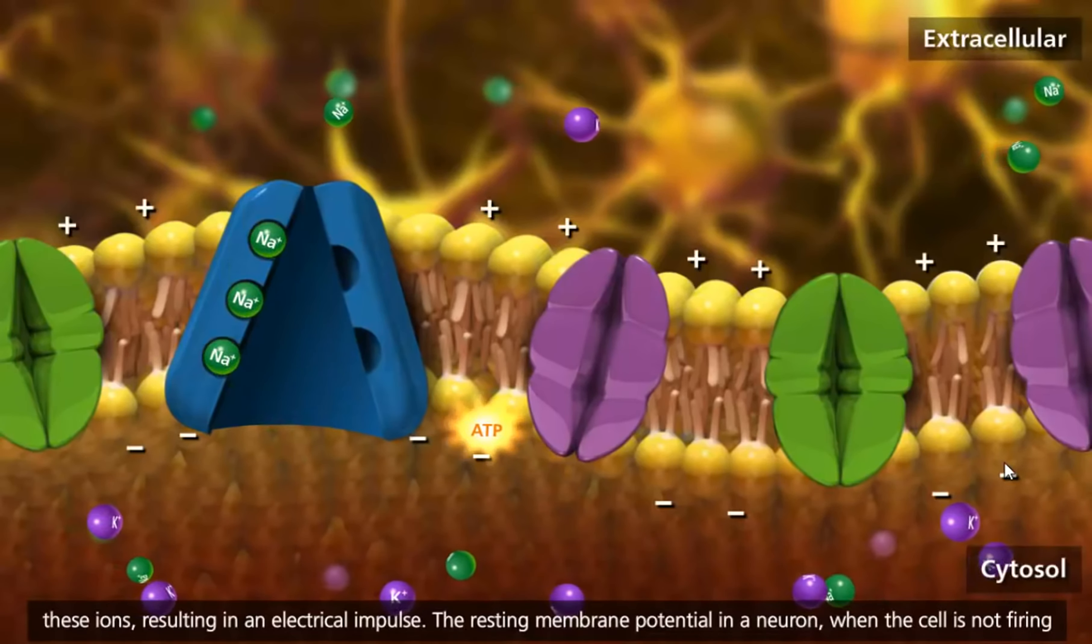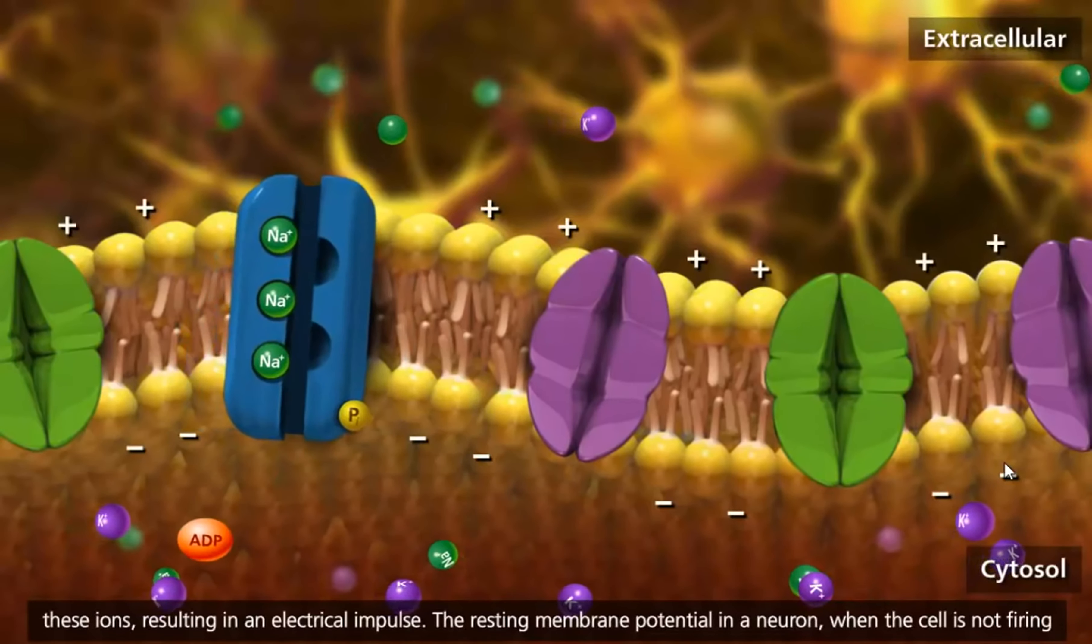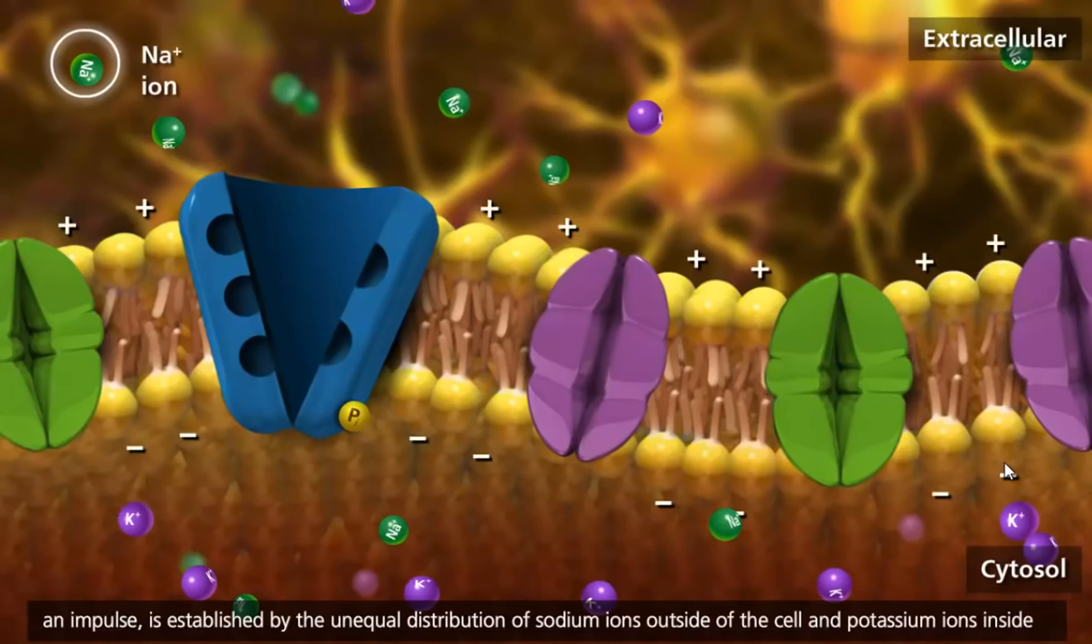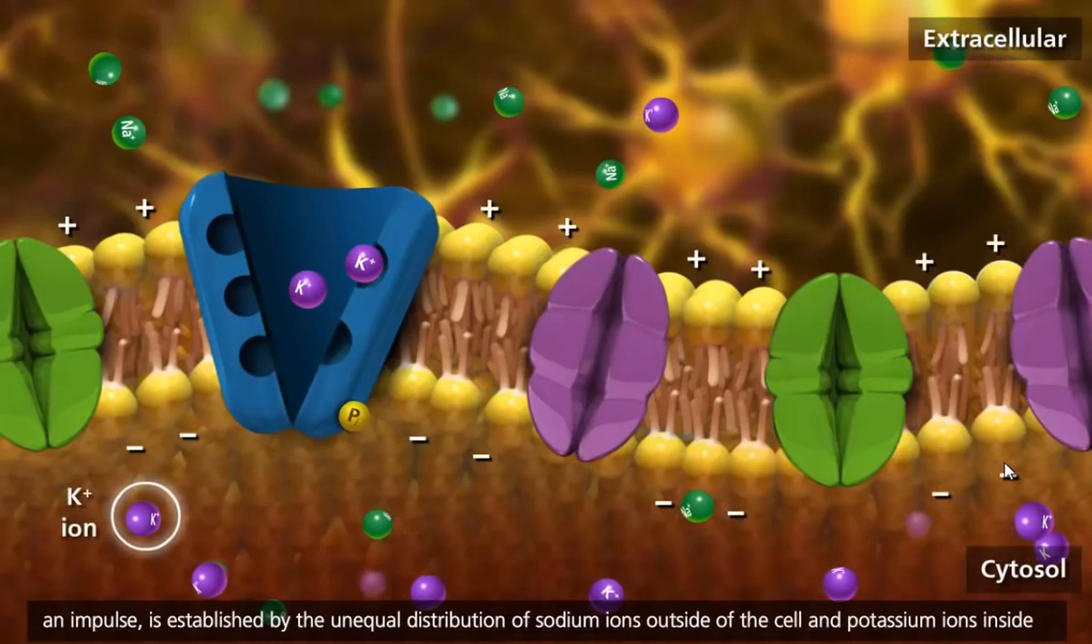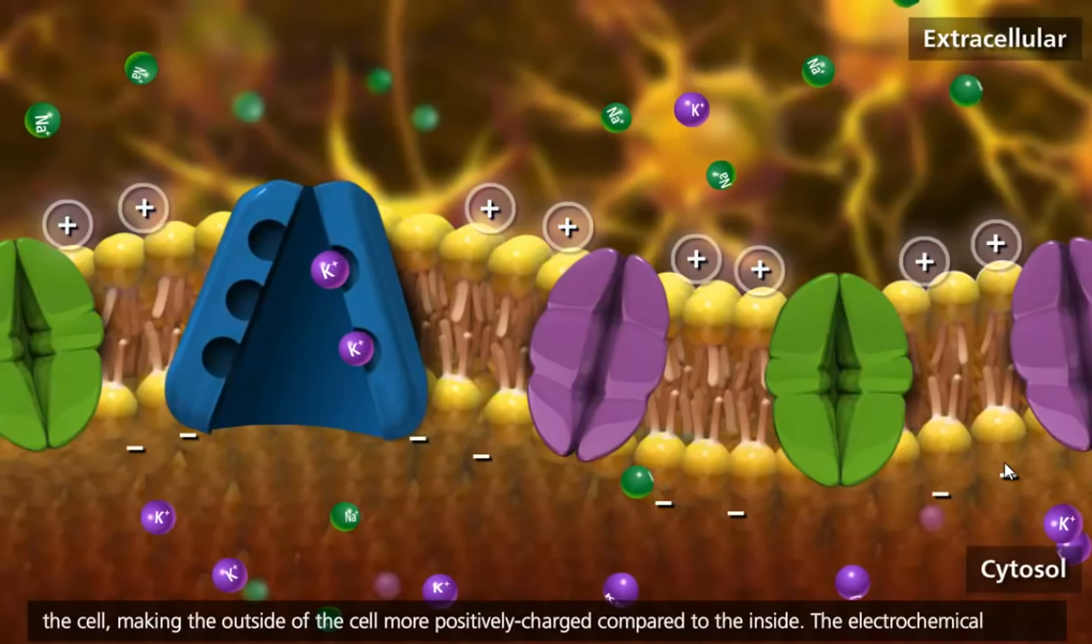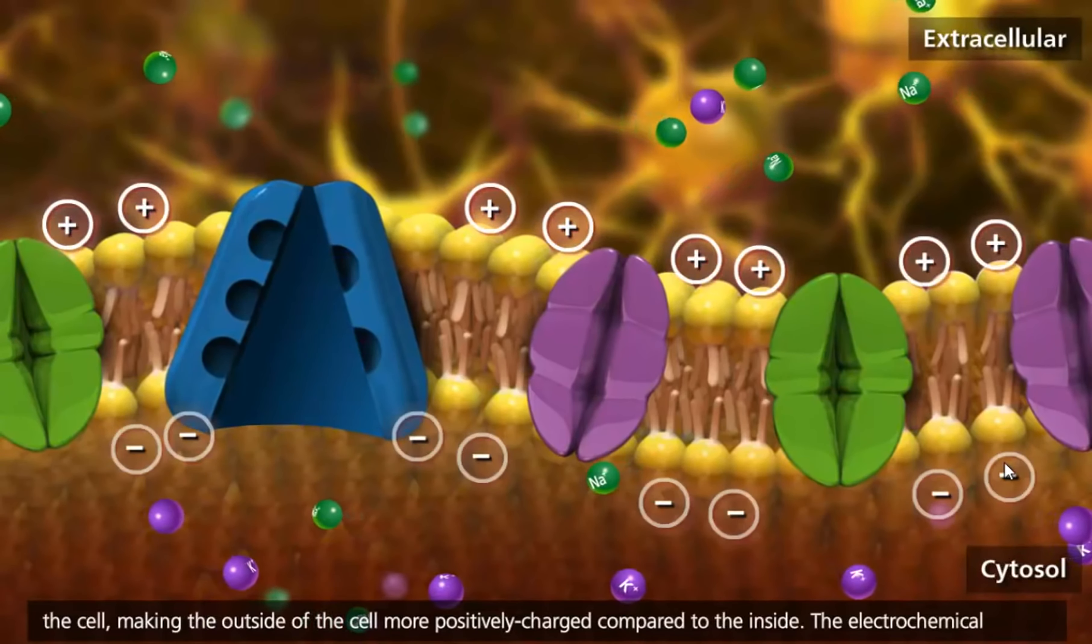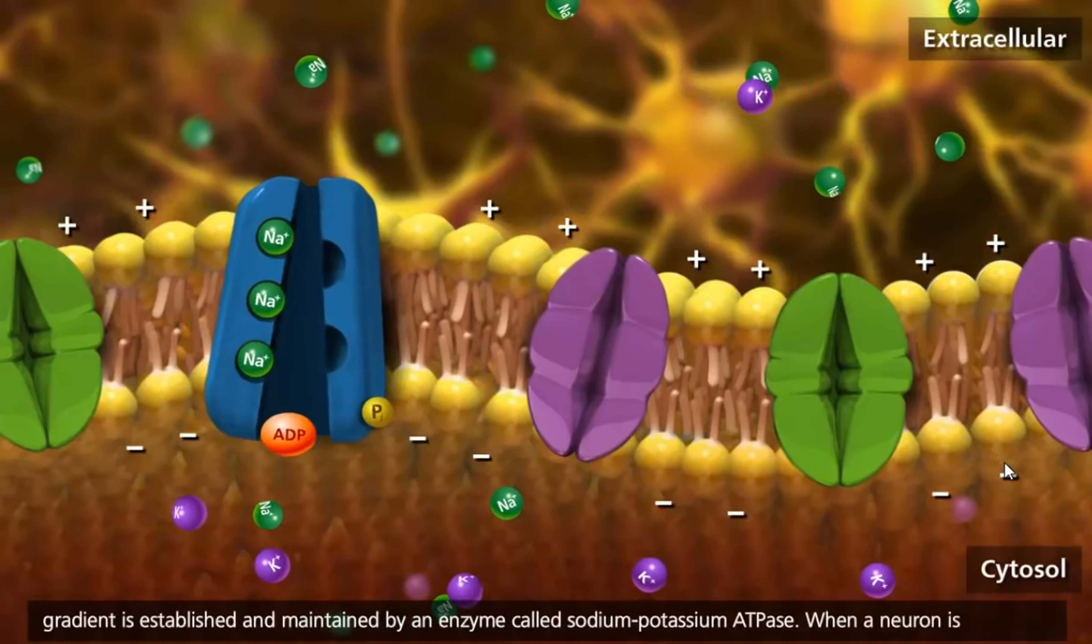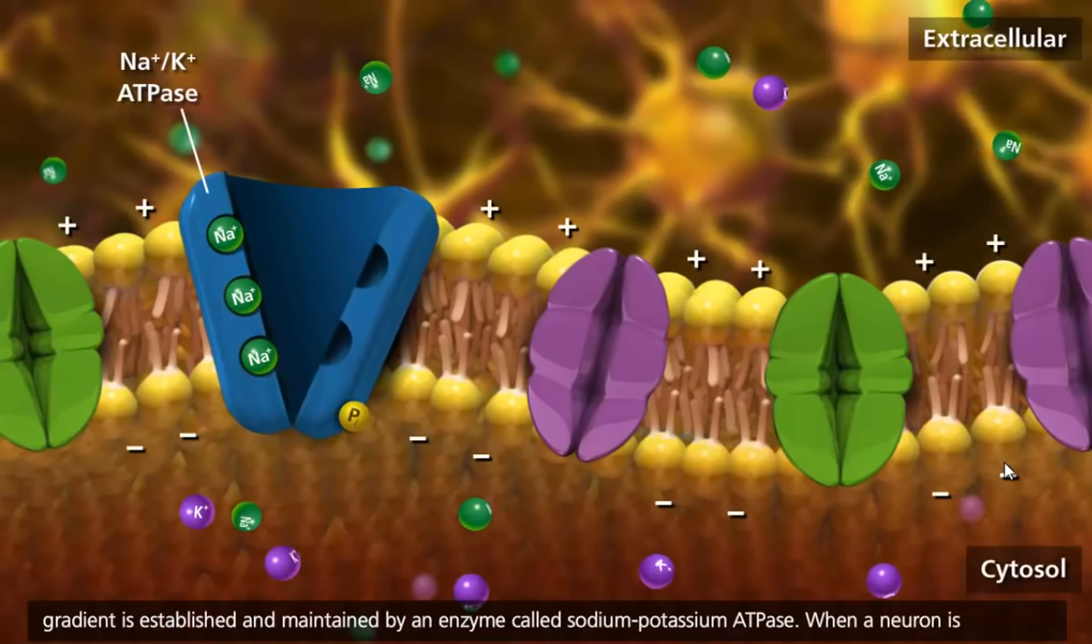The resting membrane potential in a neuron, when the cell is not firing an impulse, is established by the unequal distribution of sodium ions outside of the cell and potassium ions inside the cell, making the outside of the cell more positively charged compared to the inside. The electrochemical gradient is established and maintained by an enzyme called sodium-potassium ATPase.